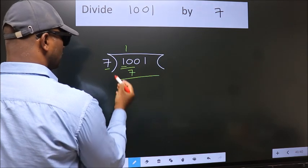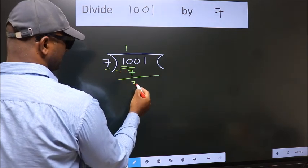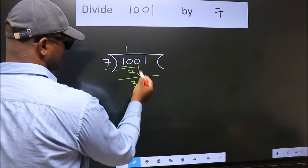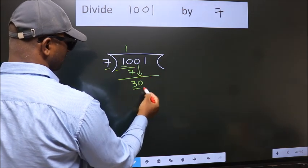Now we should subtract. We get 3. After this, bring down the next number. So 0 down, giving us 30.